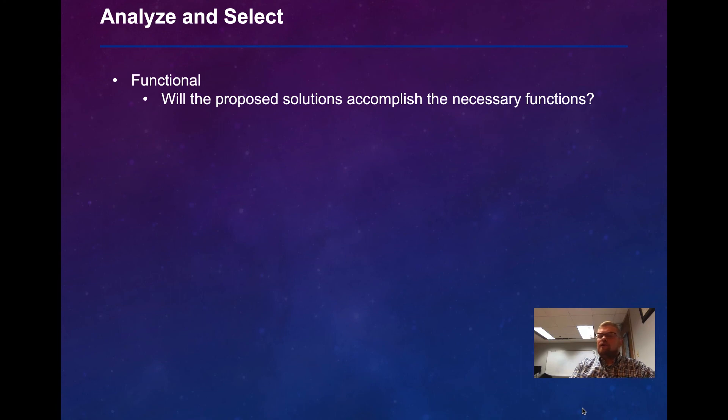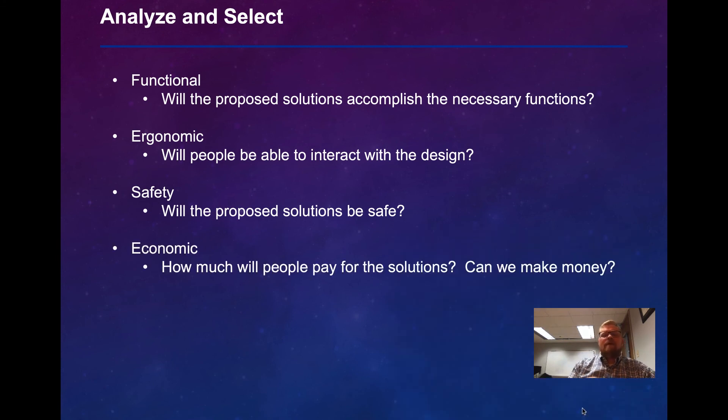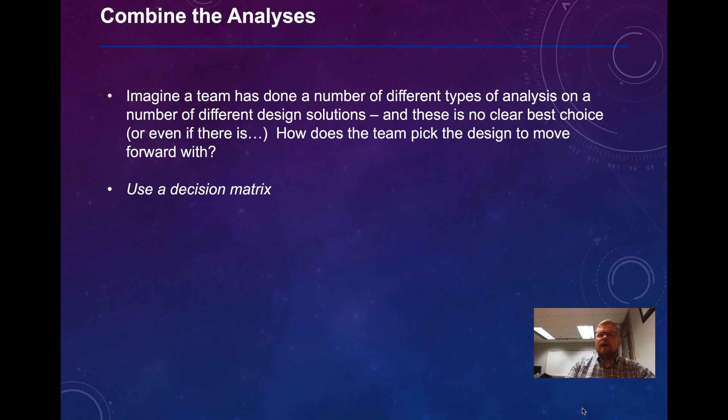So what are each of these analyses? A functional analysis is, will the proposed solution accomplish the necessary functions? Ergonomic is, how will the people interact with the design? Safety is, will the proposed solutions be safe? Economic is, how much will somebody pay for the solution? Can we make money as a company? Strength and failure analysis is, will the solution meet our environmental demands?